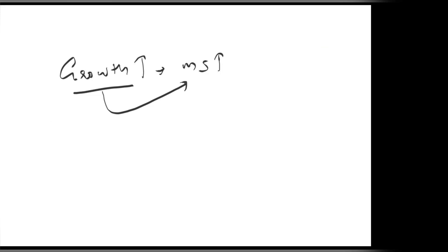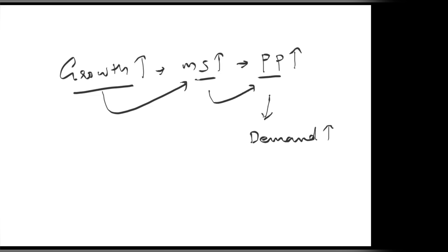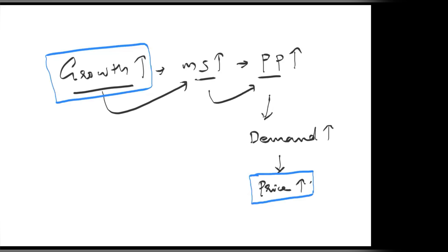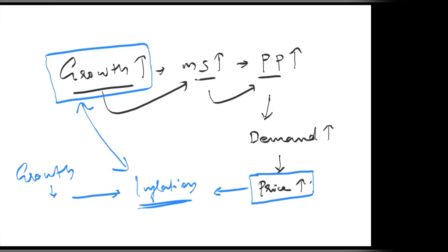You will see that sometimes government and RBI will go contradictory, because the government wants to promote growth and RBI wants to control inflation. If growth is high, money supply will be very high in the market. Money will be distributed across every section, everyone will benefit, and money supply will be high. When money supply is high, purchasing power goes up.